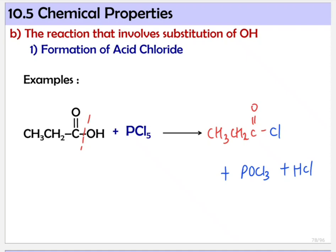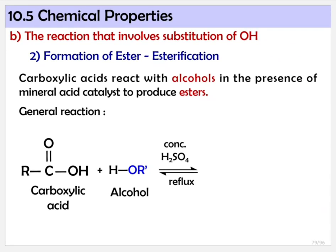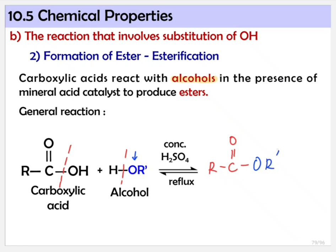The next reaction involving substitution of OH group is formation of ester — esterification. We've already covered this in the alcohol topic. For esterification, water is removed. Carboxylic acid reacts with alcohol. What happens: carboxylic acid removes its OH group, alcohol removes its hydrogen — so this OH and hydrogen form H2O. From carboxylic acid you get RC double bond O, bonded with the oxygen from alcohol — OR'. Together with H2O as side product, you get the ester product.